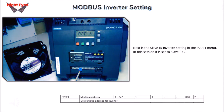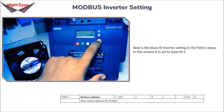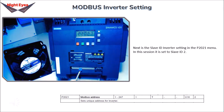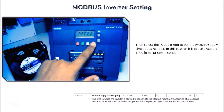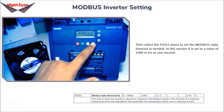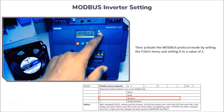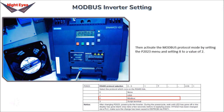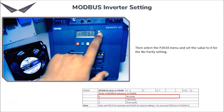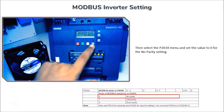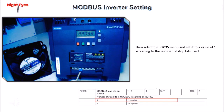Next is the Slave ID setting in the P2010 menu — in this session it is set to Slave ID 2. Then select the P2010 menu to set the Modbus reply timeout; in this session it is set to 1000 milliseconds or 1 second. Activate Modbus protocol mode by setting P2023 to a value of 2. Select P2034 and set it to 0 for No Parity. Then select P2035 and set it to 1 according to the number of stop bits used.